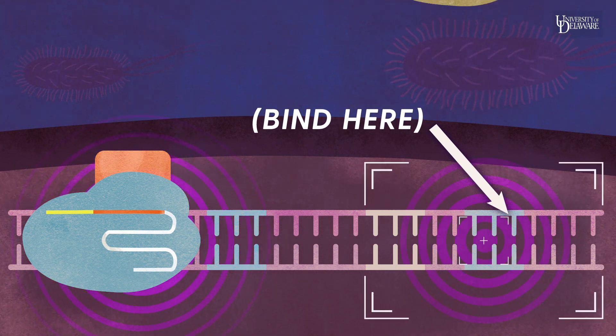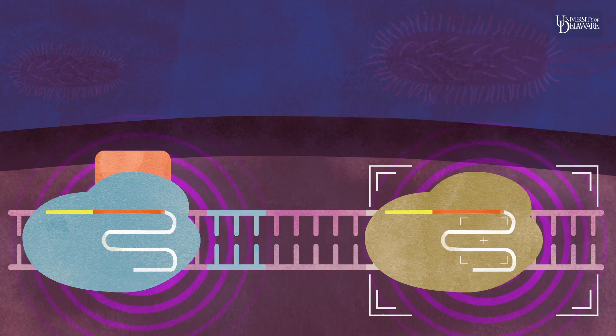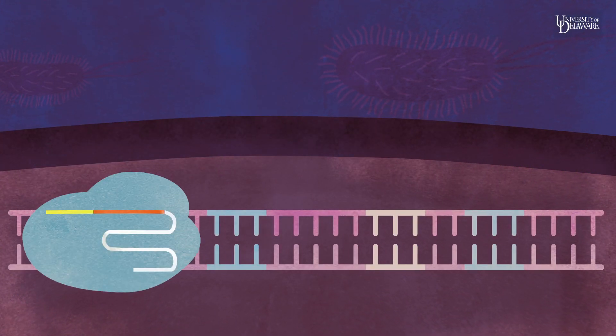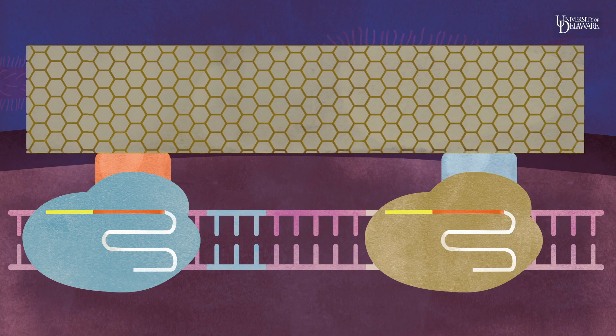University of Delaware researchers Wilfred Chen and Emily Berkman have shown that this binding strength can be used to create a dynamic assembly line, a cascade of chemical reactions, that works more efficiently and with greater precision than was possible before.